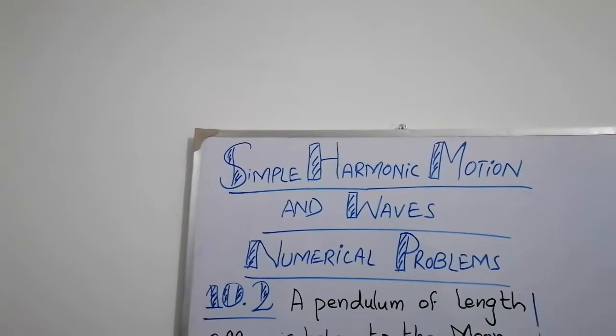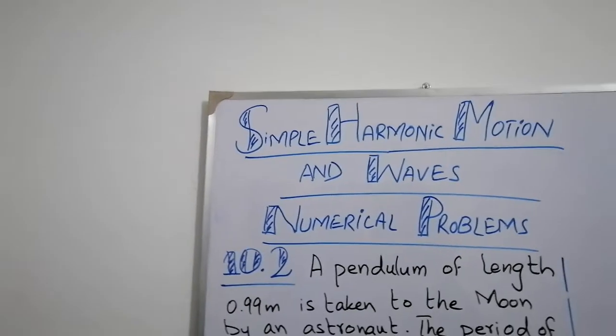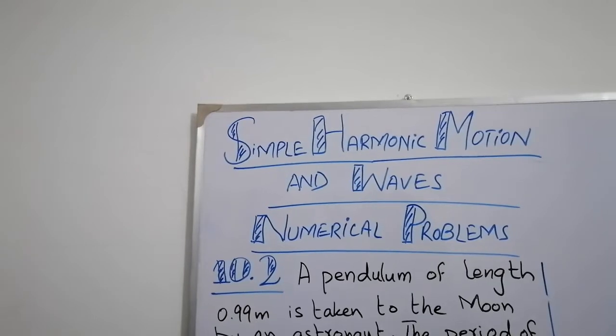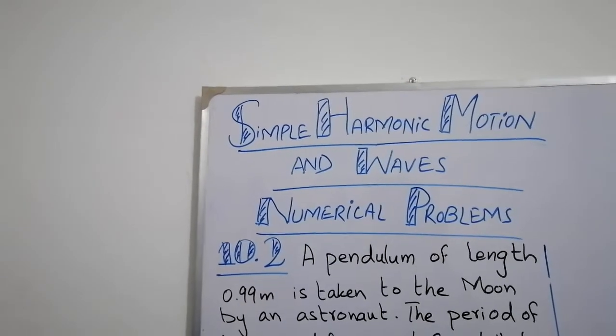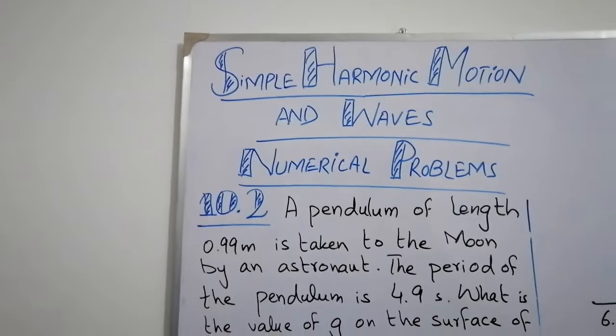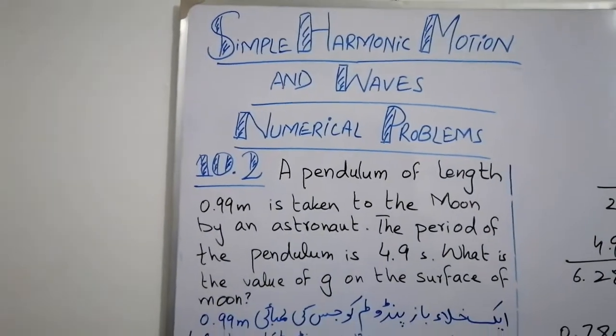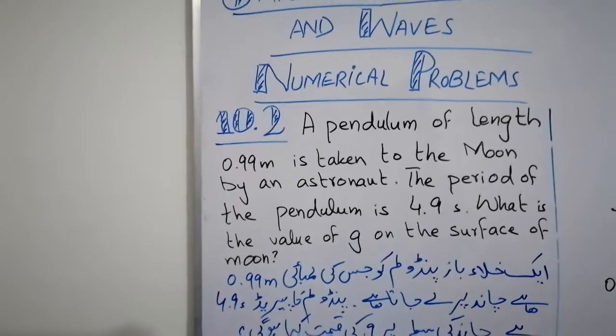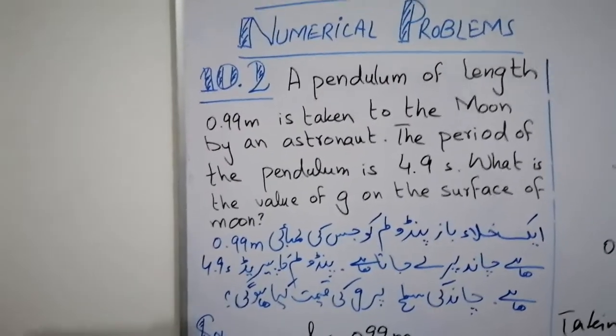For the solution, we will learn how to get the data from the statement. First of all, we will read the whole statement and get the data one by one. The thing we have given is that the pendulum is taken to the moon by an astronaut and the length of the pendulum is 0.99 meters. So what we have given is that the length L is 0.99 meters.